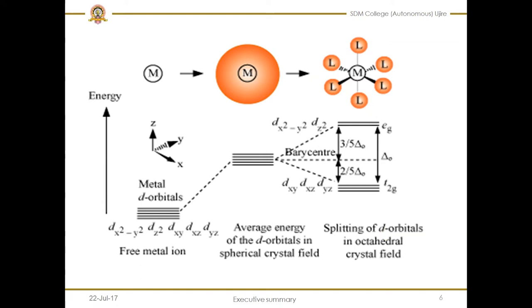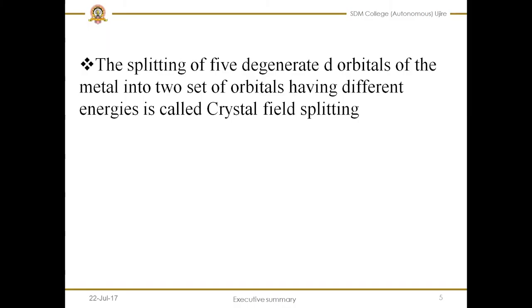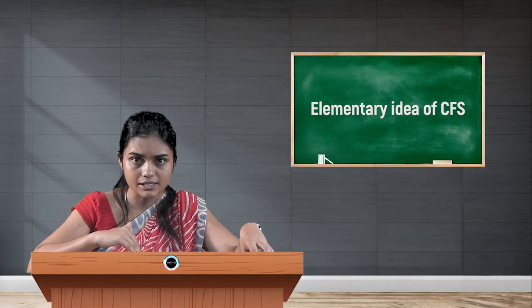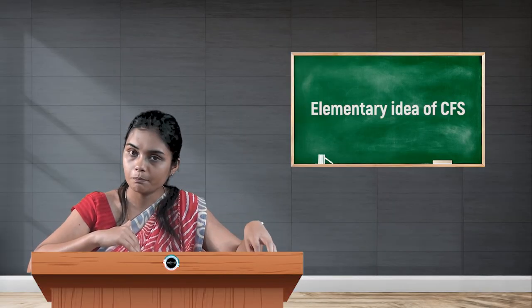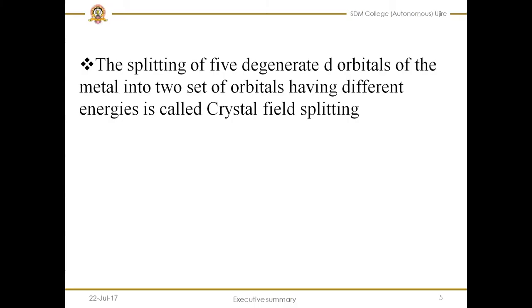The orbitals split into two sets — t2g and eg — having unequal energy, and this splitting of the five degenerate D orbitals into two sets of orbitals with different energies is called crystal field splitting. This phenomenon explains the colored nature of transition metal complexes, as well as low spin and high spin concepts, and inner and outer orbital complexes.